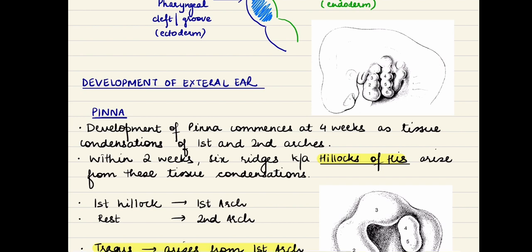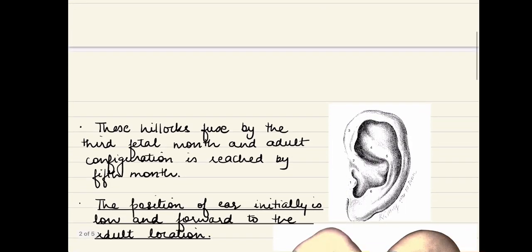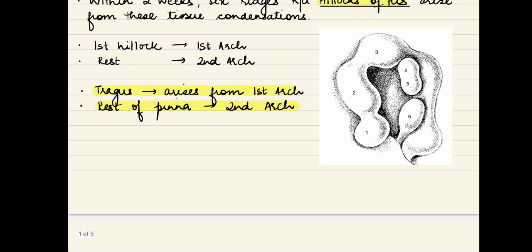A total of 6 hillocks of His are derived from the first and second arches. The more accepted thought is that the first hillock arises from the first arch, and the rest — second to sixth — arise from the second arch. With development, these hillocks start fusing with each other, and all 6 fuse by around the 5th month. The tragus is thought to be the only component arising from the first arch, whereas the rest of the pinna arises from the second arch.